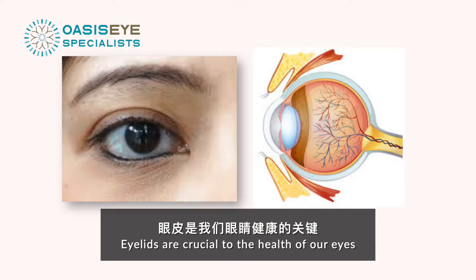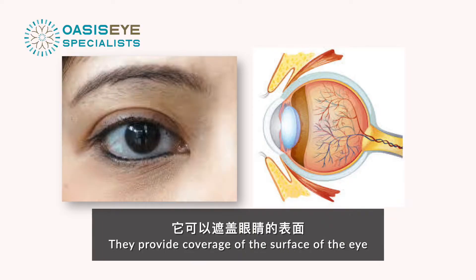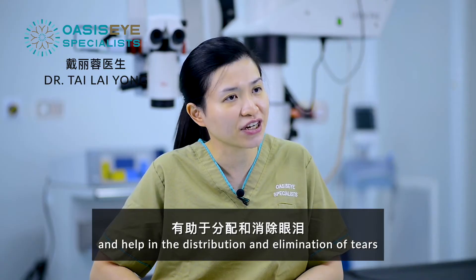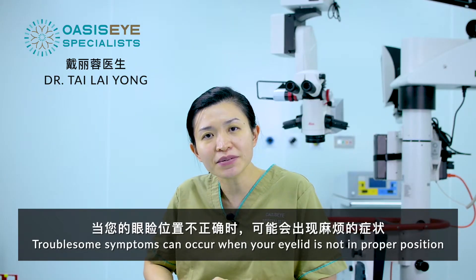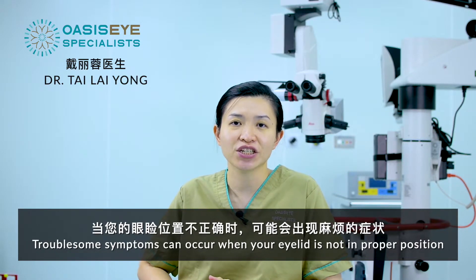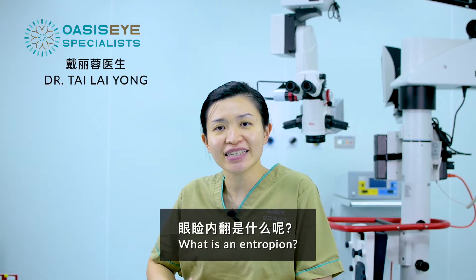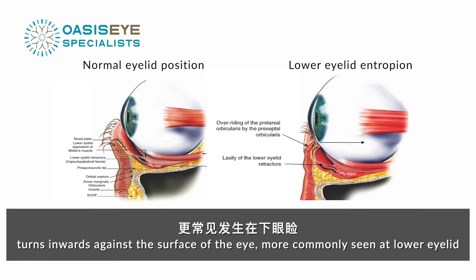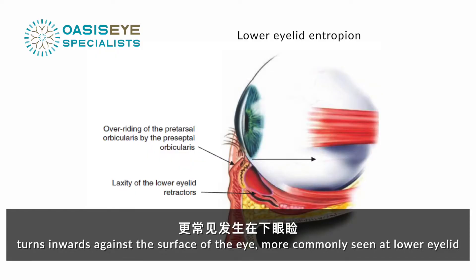Eyelids are crucial to the health of our eye. They provide coverage of the surface of the eye and help to distribute and eliminate tears. Troublesome symptoms can occur when your eyelid is not in proper position. An entropion refers to a condition in which the eyelid margins turn inwards against the surface of the eye, more commonly seen at the lower eyelids.